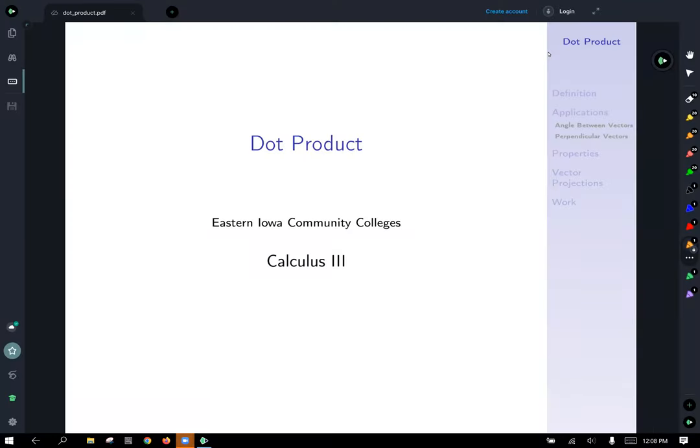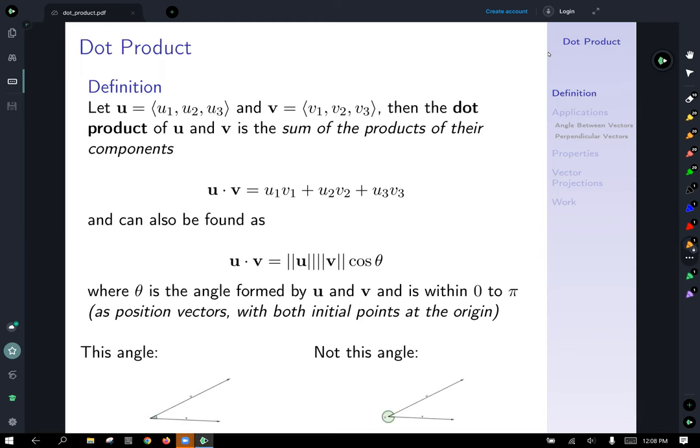Today we're going to talk about the dot product. Let's first start by defining it. The definition of the dot product involves two vectors. The vector u is our usual vector notation u₁, u₂, u₃, and v is v₁, v₂, and v₃. Then the dot product of u and v is the sum of the products of their components. What that says is multiply together the components, multiply each of the related components and add them together. And so we take u₁ times v₁, and then we add that to u₂ times v₂ and plus u₃ times v₃.